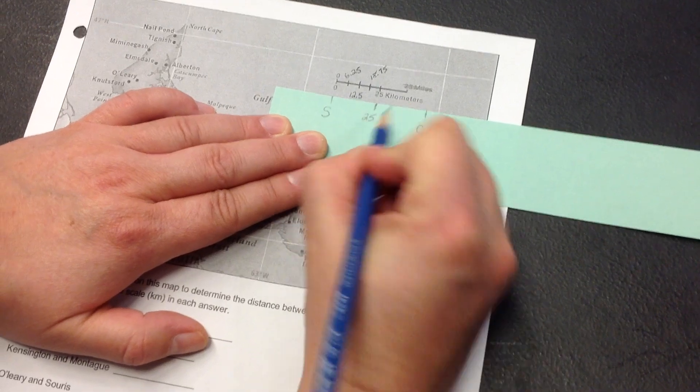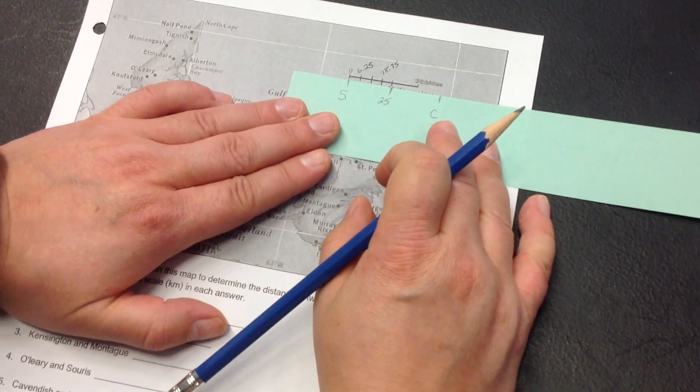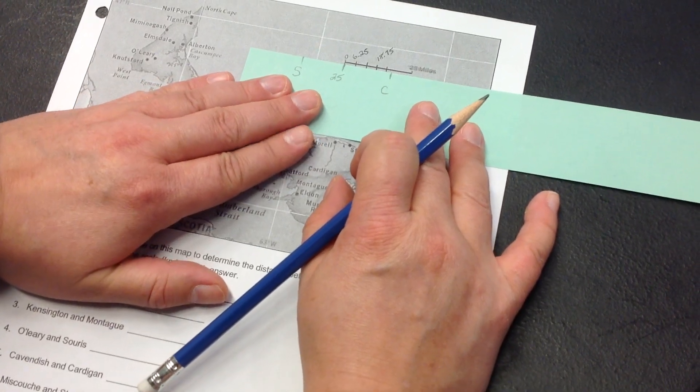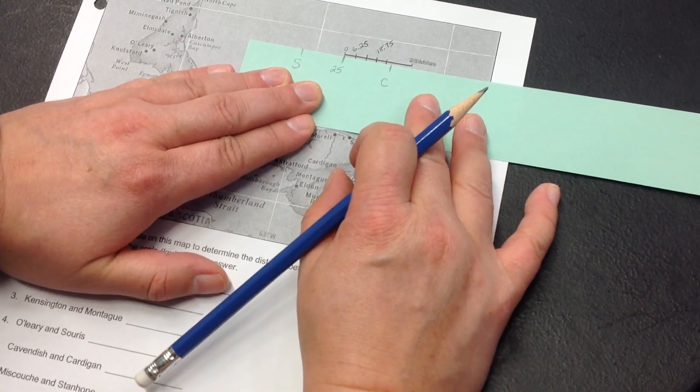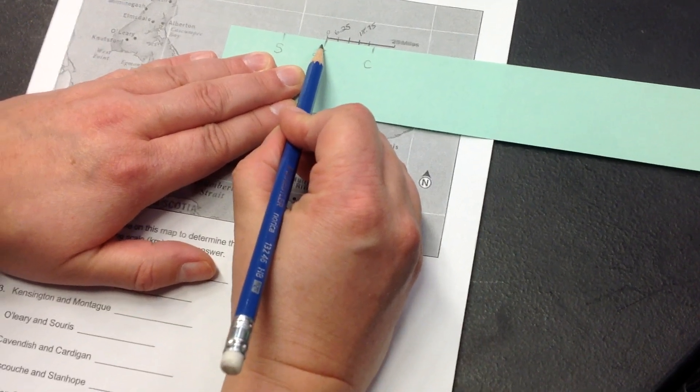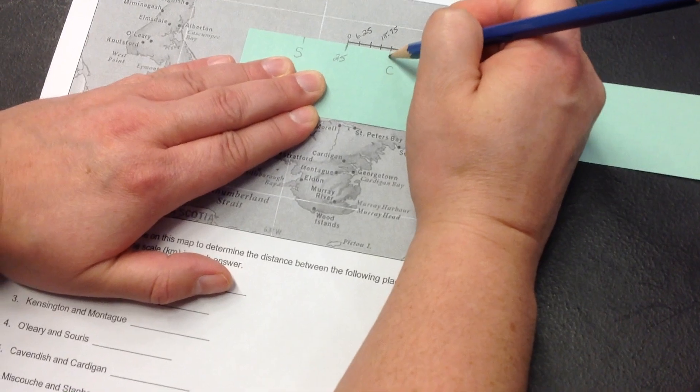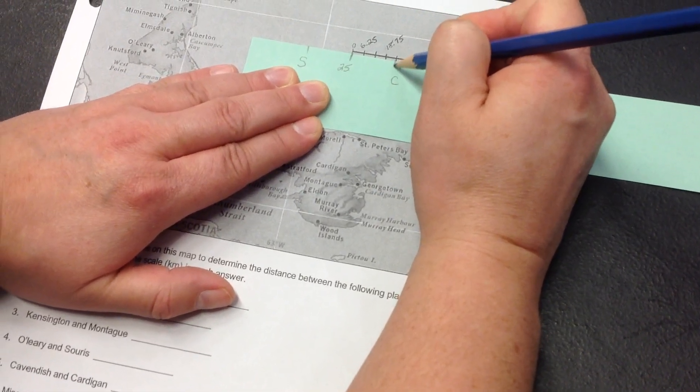The next step is to slide the paper over so that that 25 mark lands on the zero. And I make another mark as far as I can go before going past our Charlottetown mark. So, that's another 25 kilometers.